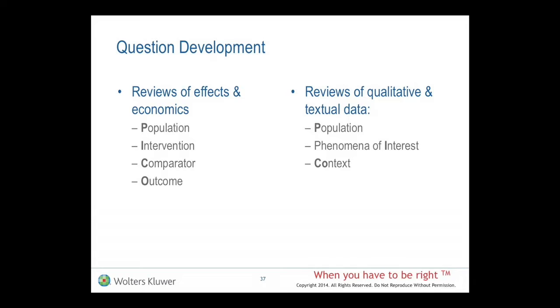If you were asking a qualitative question or something involving textual data, it wouldn't be right to use the same PICO format with a comparator, for instance — that just isn't how qualitative design is set up. So instead you would still use PICO, but now the letters mean different things: P still stands for population, I is for phenomenon of interest, and CO is for context. That's a really great tool that JBI has built into their systematic review software suite, so you can ask both qualitative and quantitative questions — getting to that pluralistic vision of evidence that's so important.